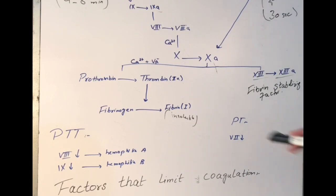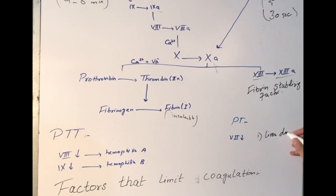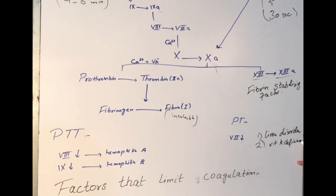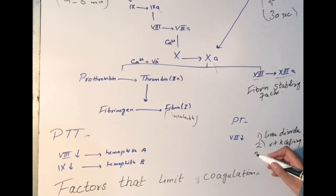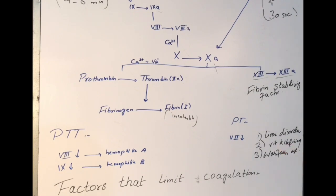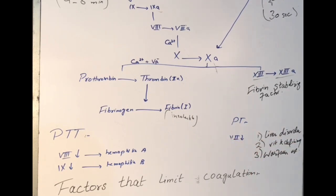Factor 7 may be low due to several reasons. First, liver disorder — because factor 7 is formed in the liver. Second, vitamin K deficiency, which can be due to malnourishment or gastrointestinal disorders like Crohn's disease — because vitamin K is necessary to convert these factors into their activated form. Third, warfarin use — warfarin inhibits vitamin K activation, thereby downregulating factor 7 and other vitamin K-dependent clotting factors.